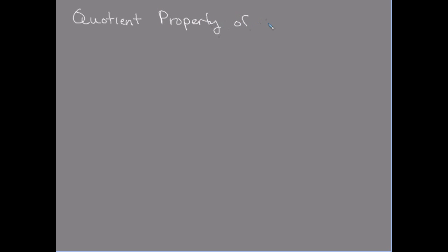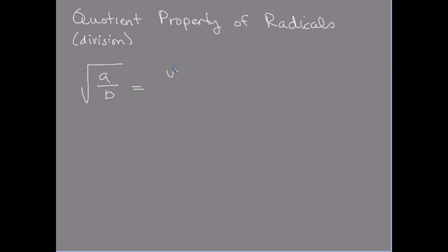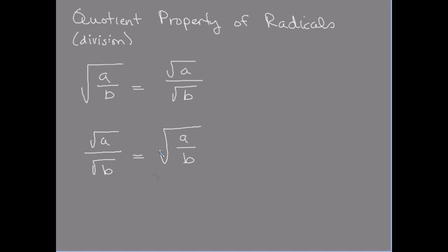There's a quotient property of radicals. Just like we have the product property, we have a quotient property, and quotients are division. The quotient property tells us that the square root of a over b is the same as the square root of a over the square root of b, and we can go the other way. We can use that to help us simplify our radicals.